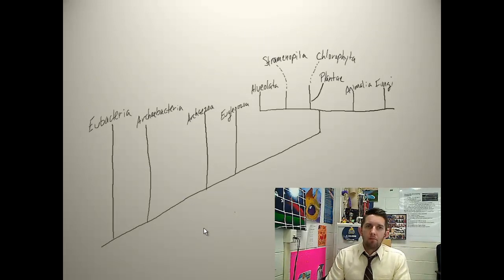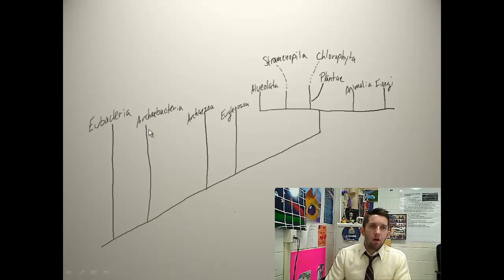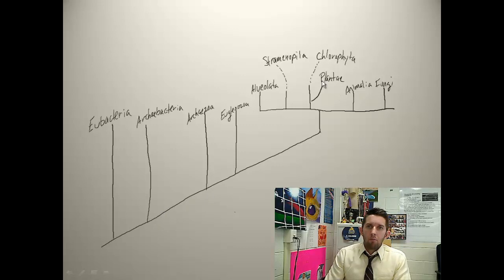Looking at a cladogram of the entire tree of life: we have eubacteria and archibacteria branching off early. You can see the archibacteria being more closely related to us than the eubacteria. Time progresses in this direction. I'll point out the plants, the animals, and the fungi. These five in the middle — archaeozoa, euglenozoa, alveolata, straminopola, and chlorophyta.